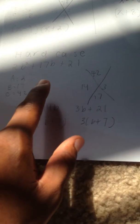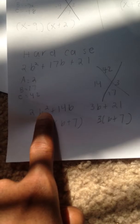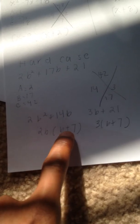As I put it into an equation, I take those two numbers and split my middle term. Instead of 17b, I rewrite it as 2b squared plus 14b for the first group, and 3b plus 21 for the second group. Factoring out a greatest common factor of 2b from the first group gives me 2b times the quantity b plus 7. Factoring out 3 from the second group gives me 3 times b plus 7.